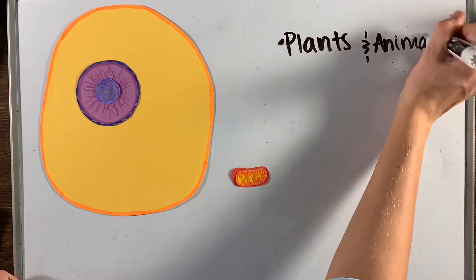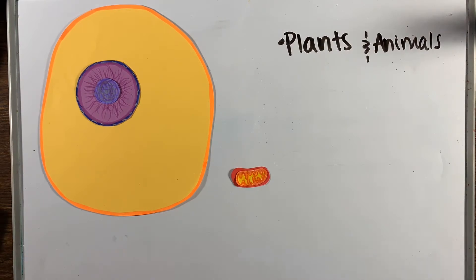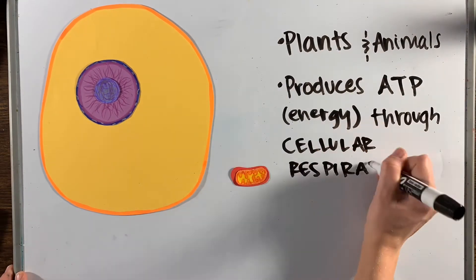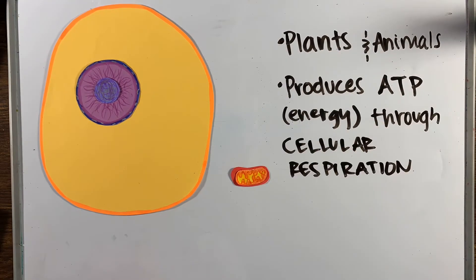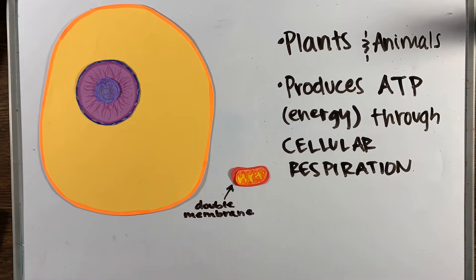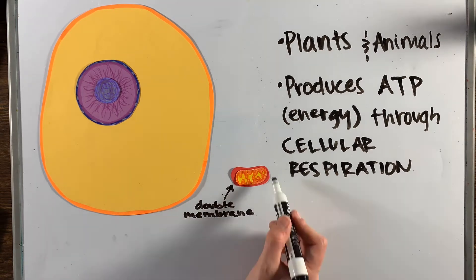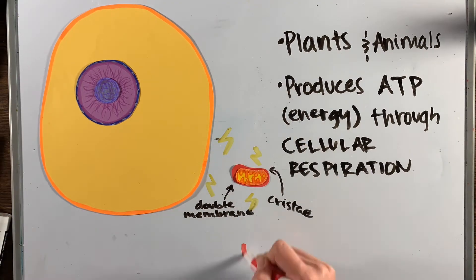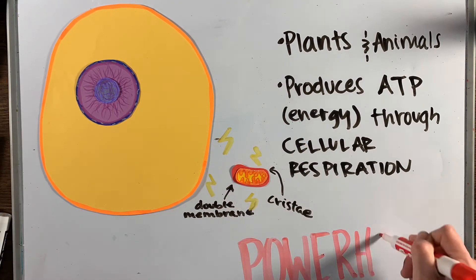Next we have the mitochondria, found in both plants and animals. The mitochondria is responsible for producing the energy, or ATP, needed for the cell to do work through the process of cellular respiration. It is made up of a double membrane and a folded inner membrane called cristae, which increases surface area.